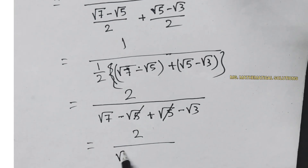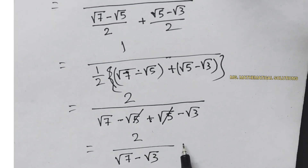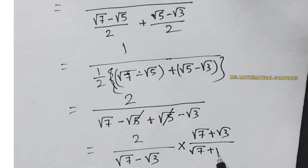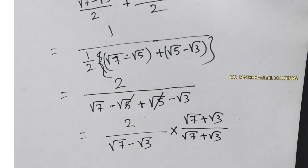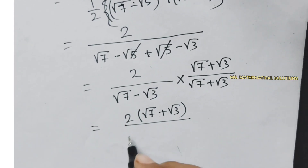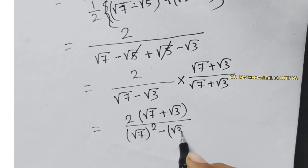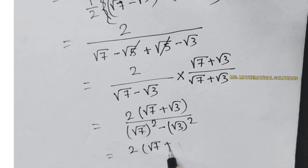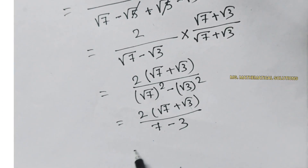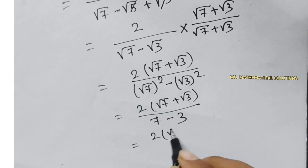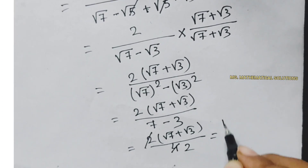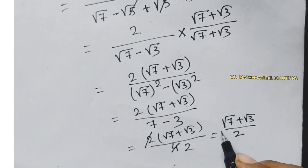Now we multiply numerator and denominator by root 7 plus root 3 over root 7 plus root 3. Using the a squared minus b squared formula: 2 times root 7 plus root 3, divided by root 7 squared minus root 3 squared, which equals 2 times root 7 plus root 3, divided by 7 minus 3, which is 4. So the answer is 2 times root 7 plus root 3, divided by 4, which simplifies to root 7 plus root 3, divided by 2. This is the final answer.